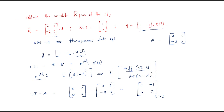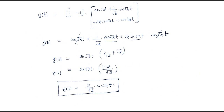To summarize: when a problem gives ẋ = Ax with x(0) and y = Cx, and no input, we directly use the zero-input response formula. First find the state transition matrix e^(At) using the Laplace inverse of (sI - A)⁻¹, then substitute into the output equation y(t) = C·e^(At)·x(0) to get the final output.